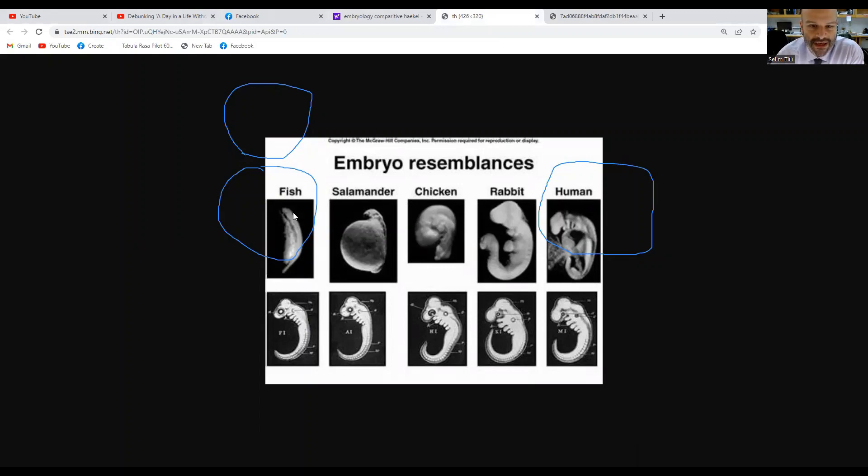So while Haeckel's images were not entirely truthful or accurate, the overall truth of the similarity of the earliest development is correct. Homologous structures, similar bone structures, and comparative embryology are two important pieces of the puzzle supporting the concept of common ancestry.